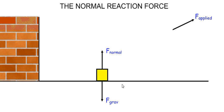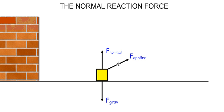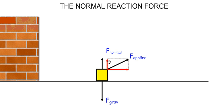Let us consider our block resting on the ground, whereby the normal force equals the gravitational force. What will happen to the size of the normal force if an additional applied force was acted at an angle to the horizontal? In this case, the additional applied force has a horizontal component but also a vertical component. The normal force will not remain the same as the gravitational force. In fact, the normal force will have to reduce such that when you add the normal force to the component of the applied force acting in the vertically upward direction, both of these components equal the size of the gravitational force.